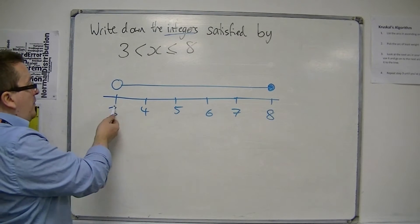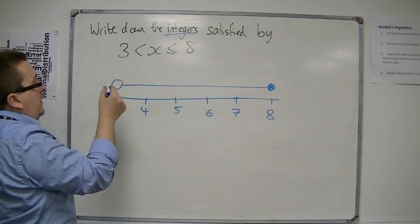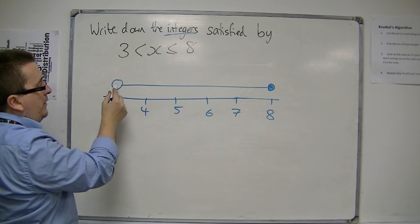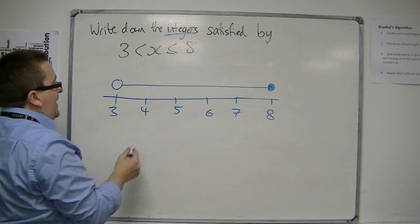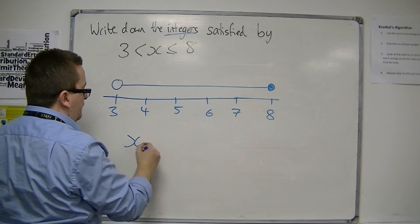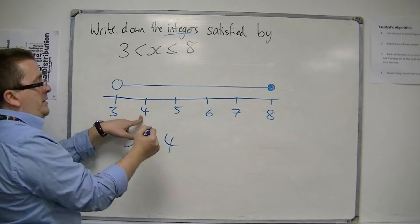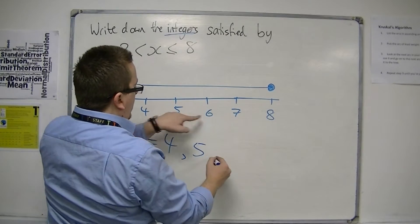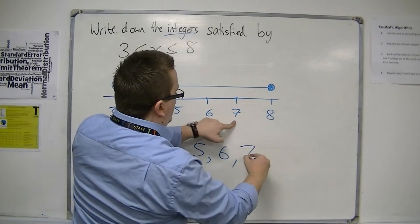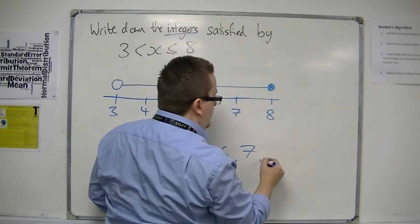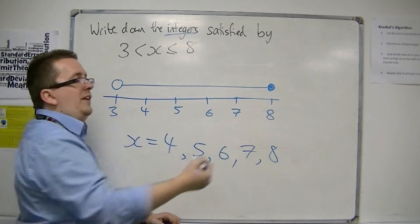Now, it can't take 3, because it's not allowed by the inequality, it's a hollow dot. It can take 4, because that's inside, it can take 5, it can take 6, it can take 7, and it can take 8, because that is included.